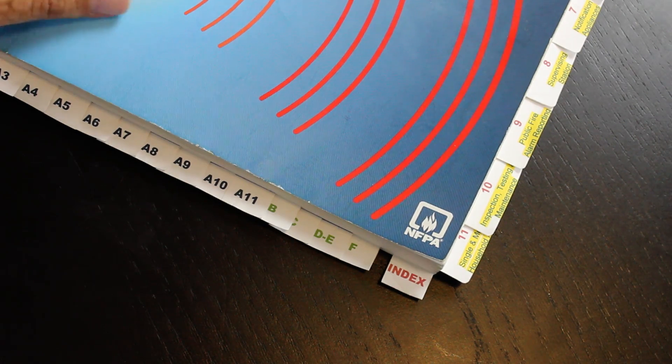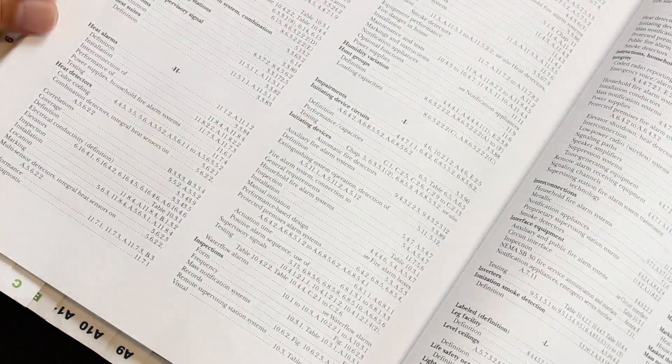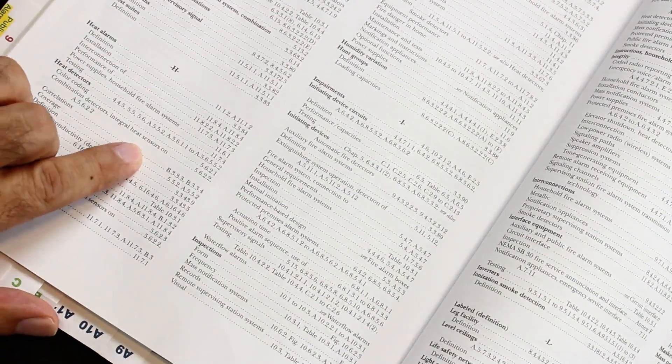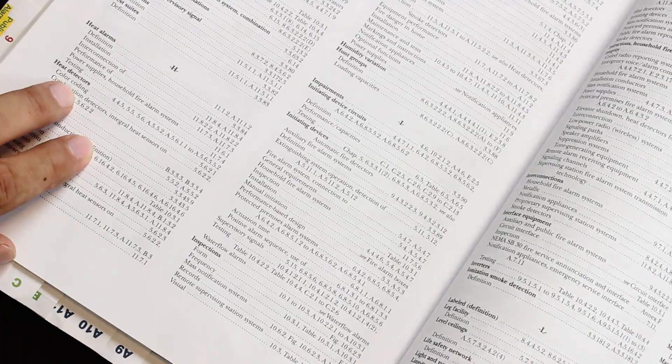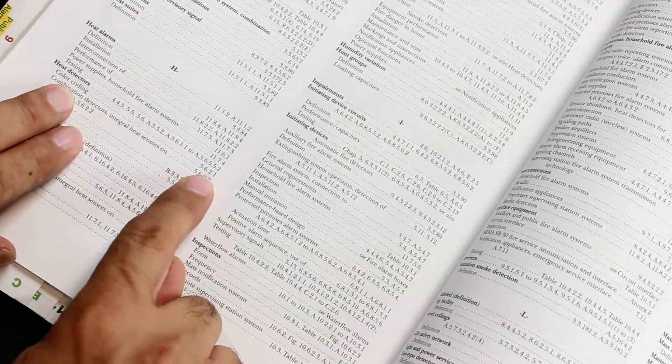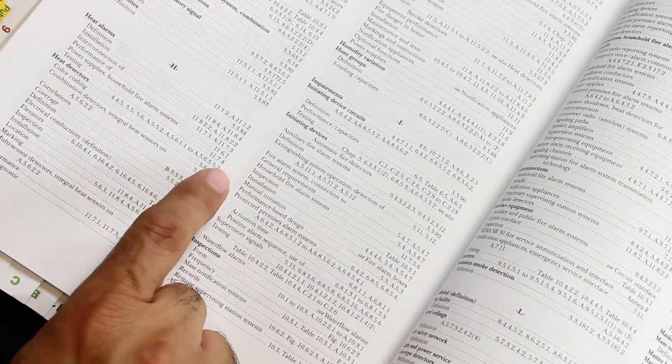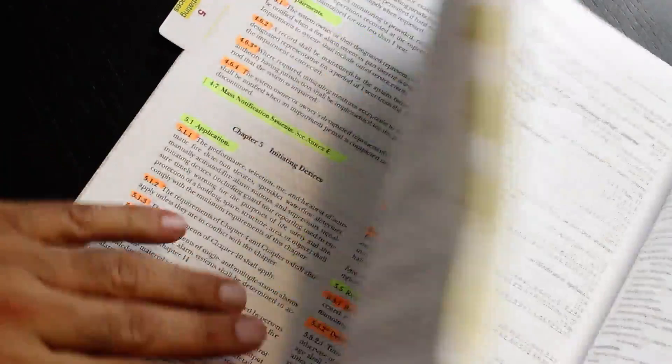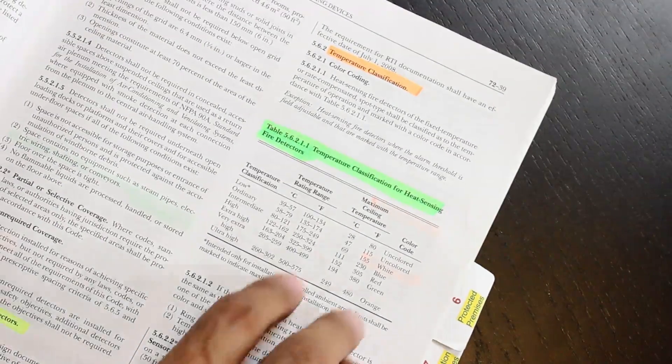We jump to the index. We search for heat detector first—H, heat detector. The next keyword is color code, color coding. We see the answer is in section 5.6.2.1. So we open, we go to section five using our tab, and we go down to 5.6.2.1.